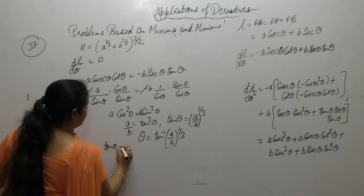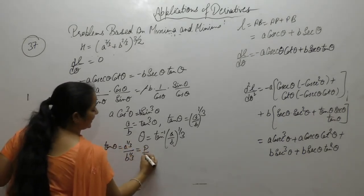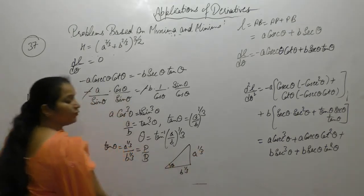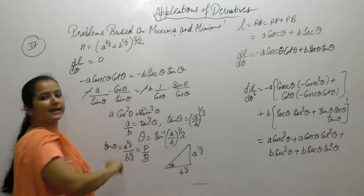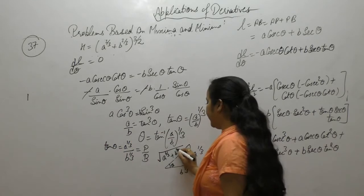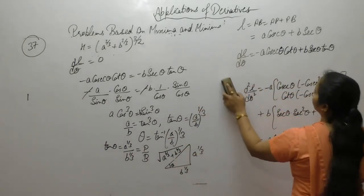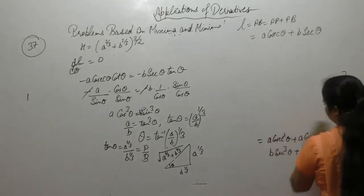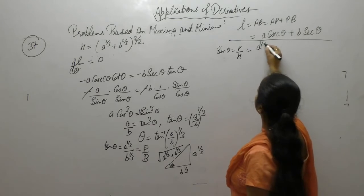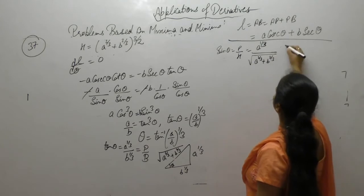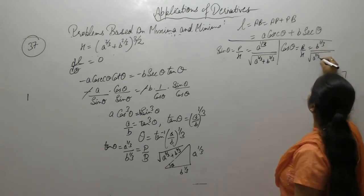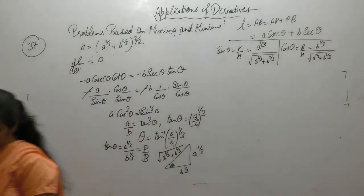If tan theta equals A^(1/3) / B^(1/3), and tan equals perpendicular upon base, then hypotenuse equals square root of (A^(1/3))² + (B^(1/3))², which is square root of A^(2/3) + B^(2/3). So sin theta equals A^(1/3) / sqrt(A^(2/3) + B^(2/3)) and cos theta equals B^(1/3) / sqrt(A^(2/3) + B^(2/3)).